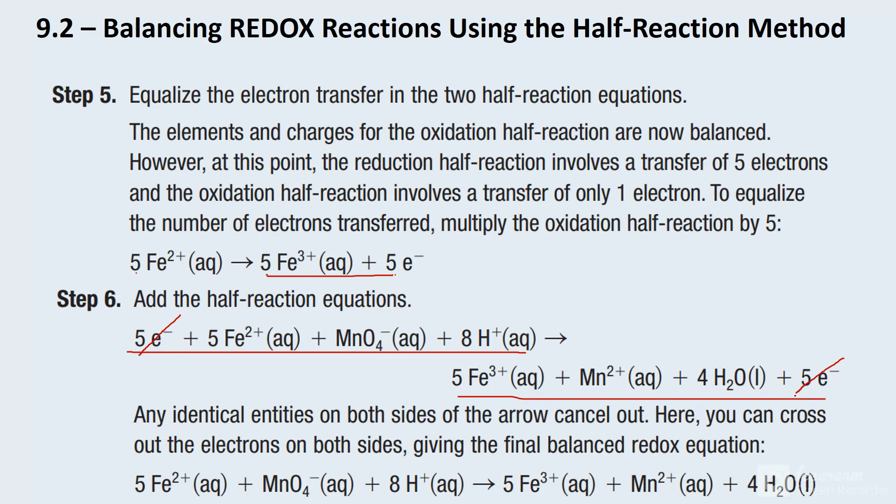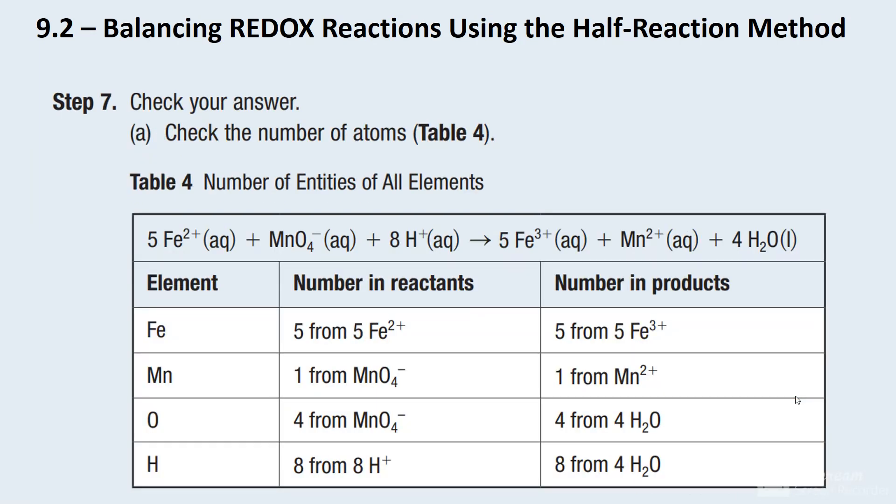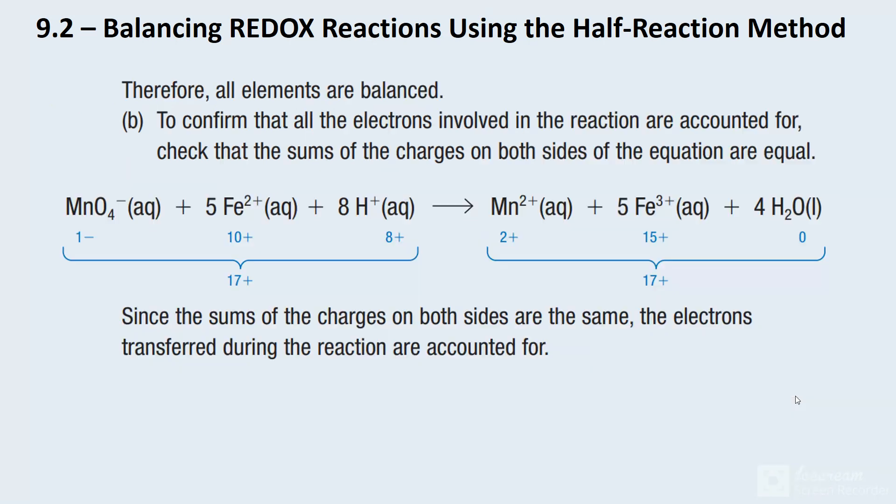We should probably do a couple little double checks first, though. So in step seven here, we've got a table. And you can pause the video and investigate that a little bit further. Personally, I just like to double check that the charges are correct. And when you do that, you'll notice that we've got a charge of 17 on both sides. And when that works out, you're good to go. And I can't tell you how many times that I do this final check here with the charges. And sometimes...